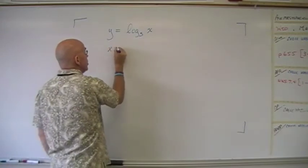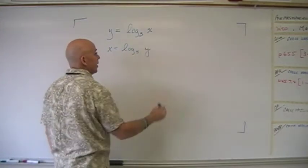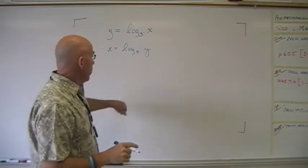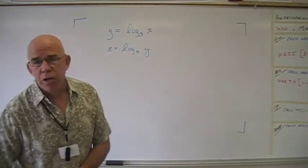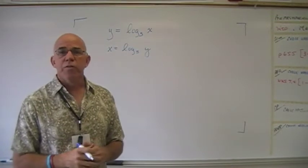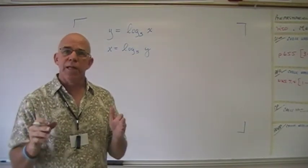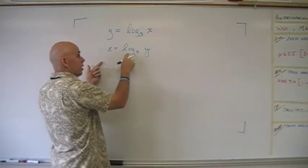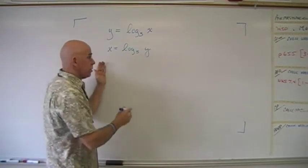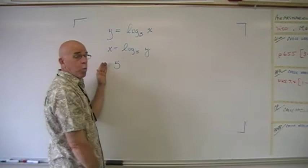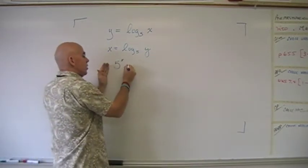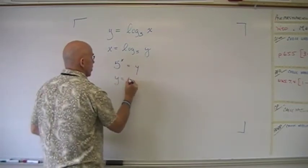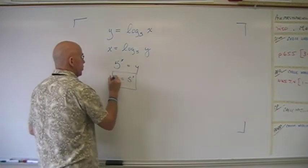The first step, just like we learned in the previous chapter, is that everywhere you see y you write x, and everywhere you see x you write y. Then you want to isolate y. But rather than dividing by log base 5, you rewrite in exponential form. So: what's the base — 5; what's the power — x; what's the answer — y. That gives you your inverse function, with y isolated on the left-hand side.